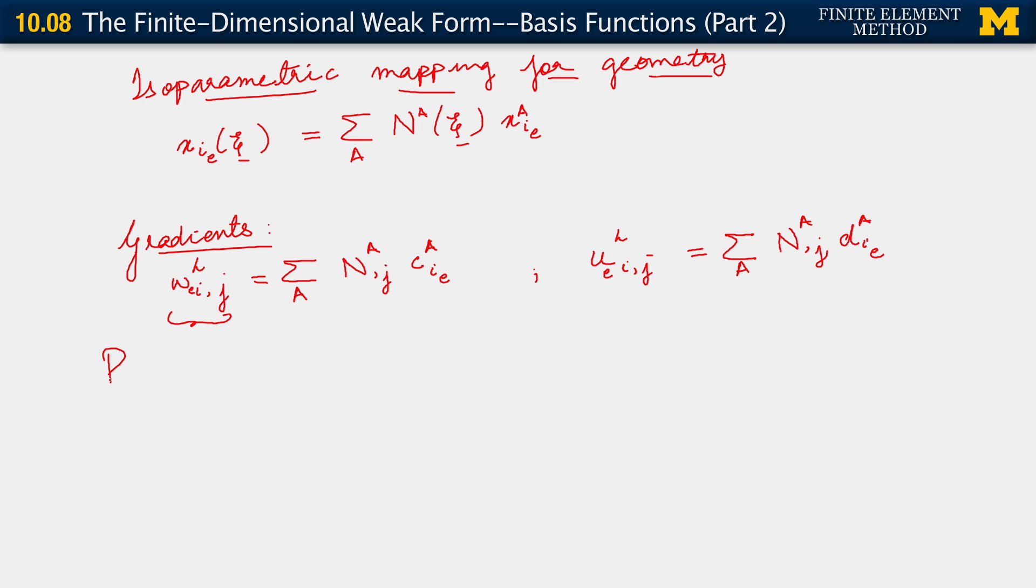Just recall the term on the left-hand side in our weak form: integral over Ω of W^h_{i,j} times σ^h. But we know of course that σ^h is just C_{ijkl} ε^h_{kl}, where σ_{ij} = C_{ijkl} ε^h_{kl}.